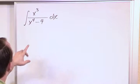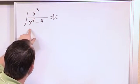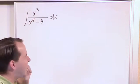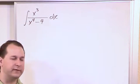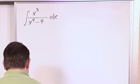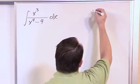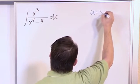But the derivative of the bottom here is 4x cubed, and that's almost exactly what we have in the top. We have an x cubed in the top. So it's a very good bet that that is the correct substitution. So we have u is equal to x to the fourth minus 4.